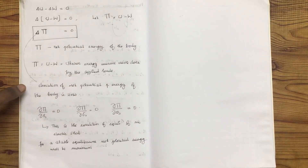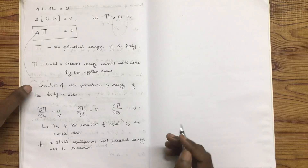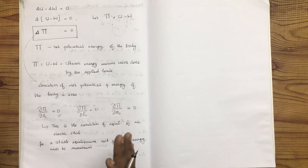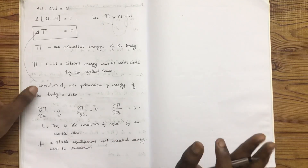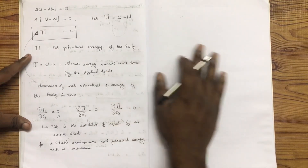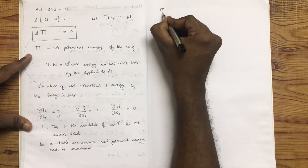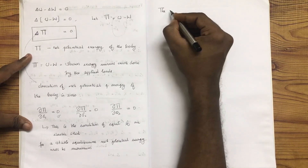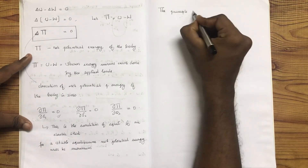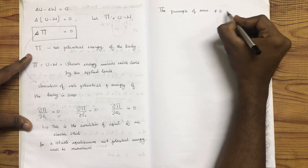For stable equilibrium, the potential energy should be minimum. That minimum condition gives us the Principle of Minimum Potential Energy. The principle of minimum potential energy states that...